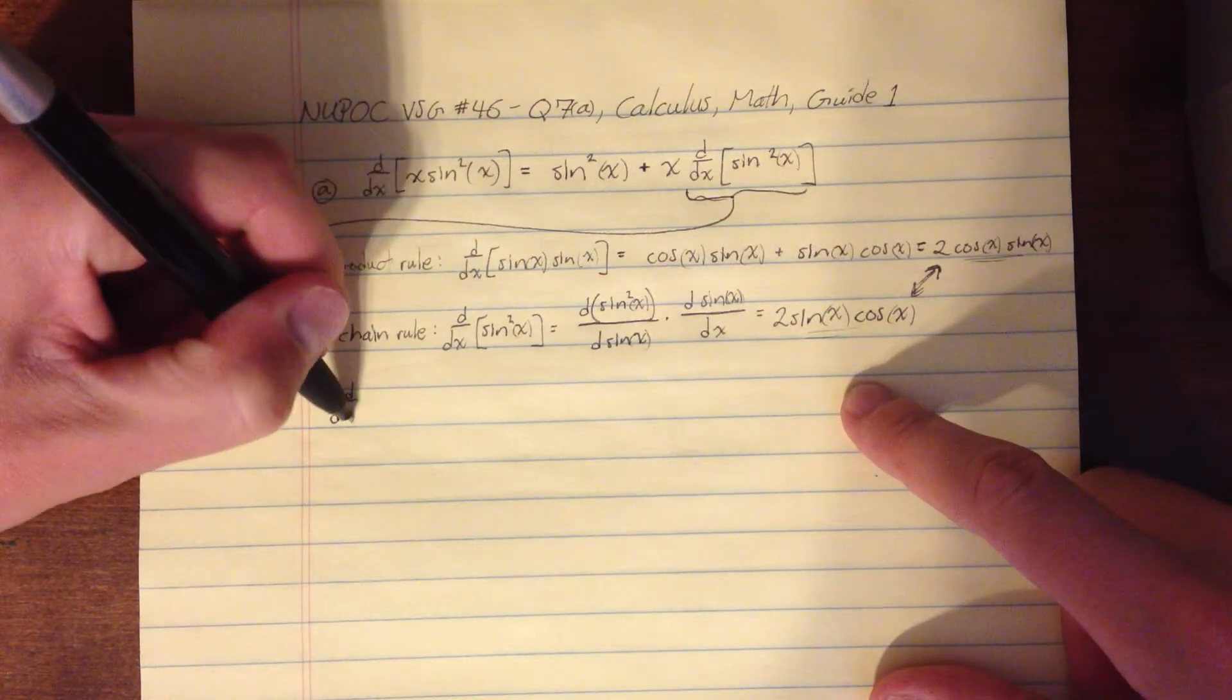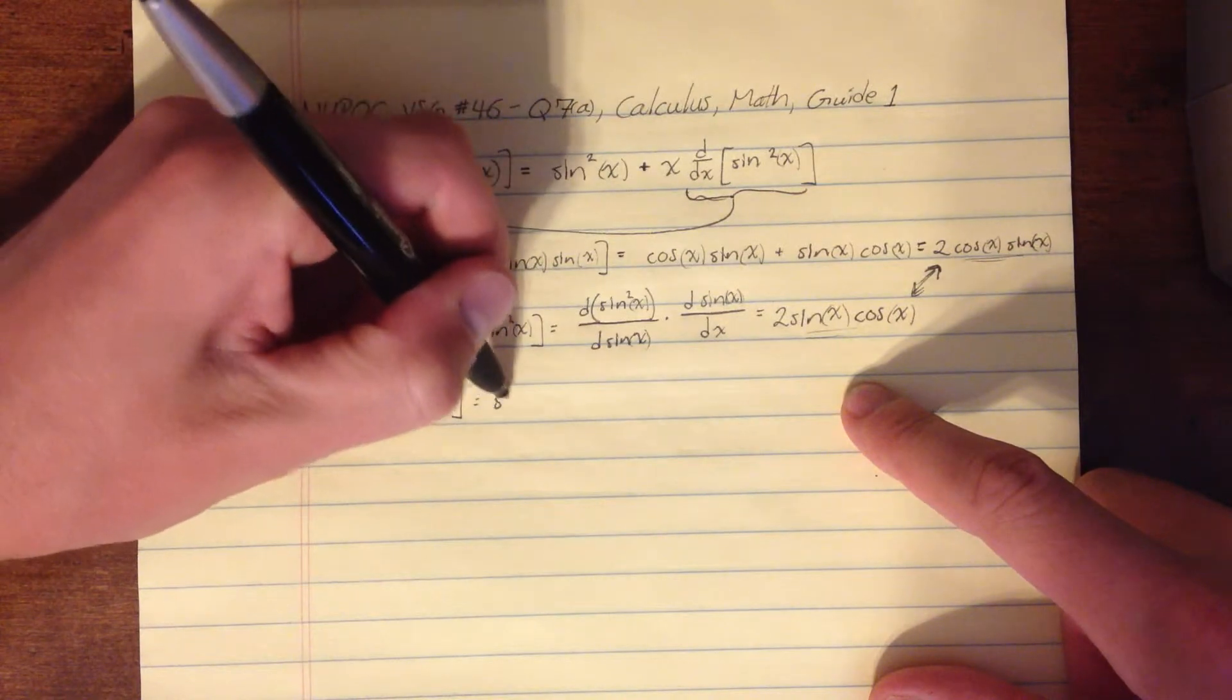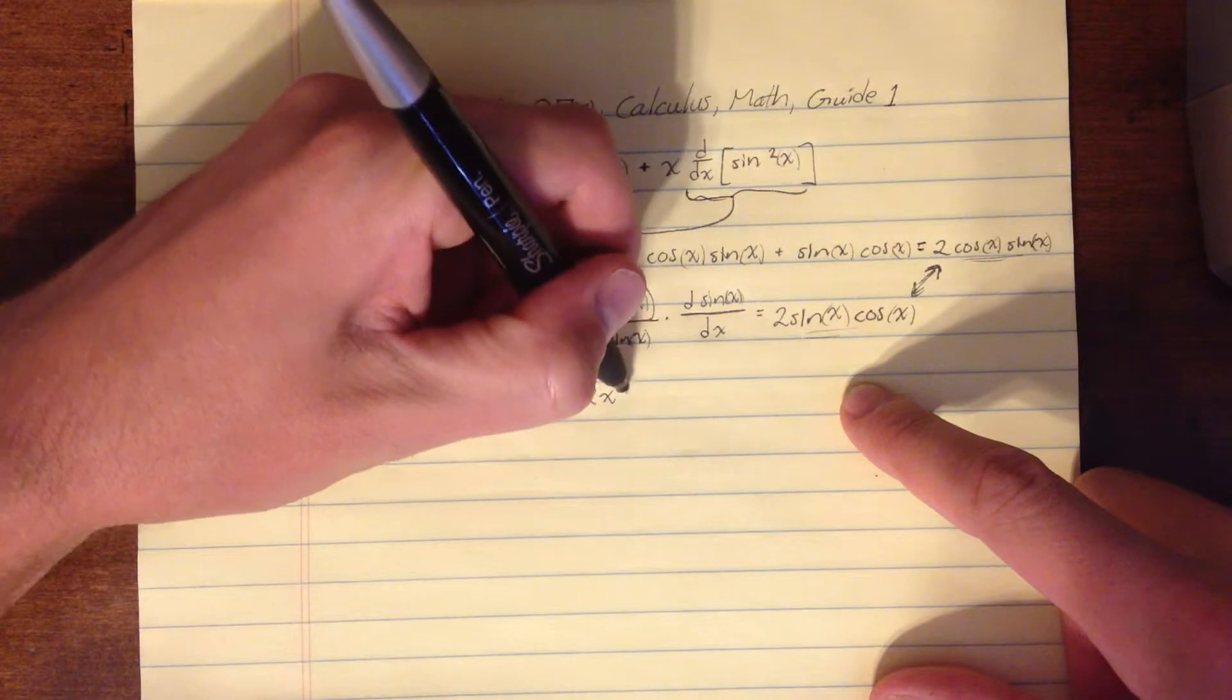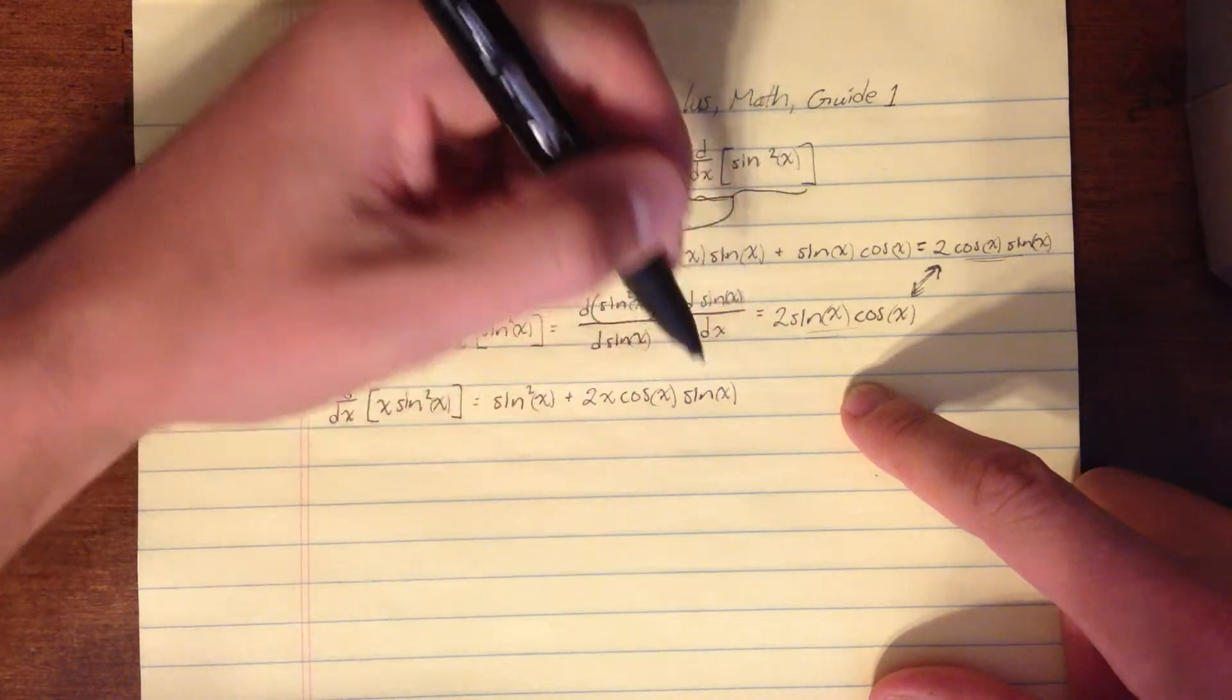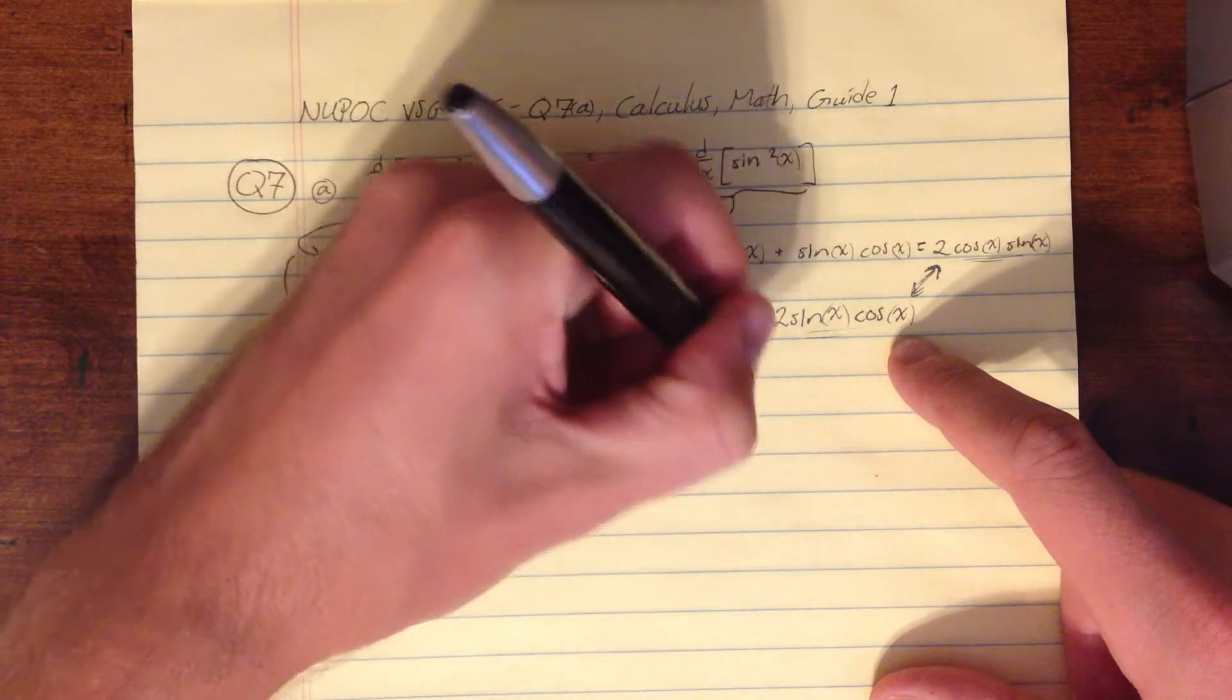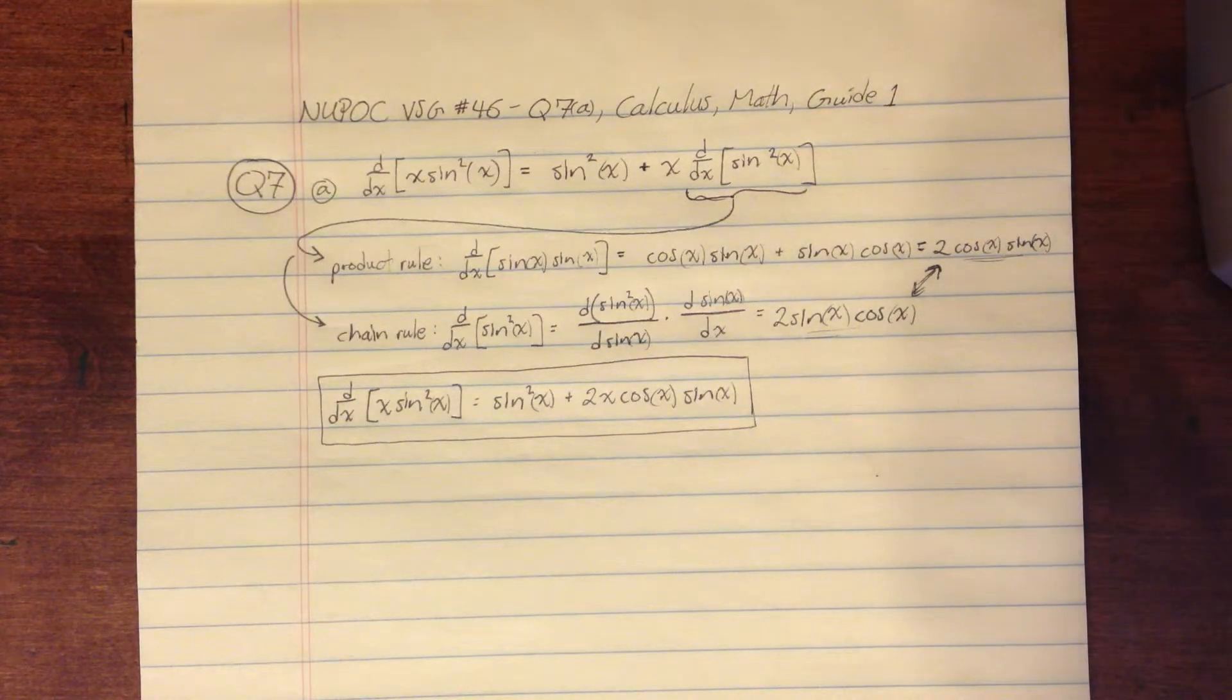So the overall solution, we write d/dx, X, sine squared of X, equals this first term, sine squared of X, plus this term times X, so 2X cosine X sine of X. So we can sort of block that off there, like that. And I think that should agree with the solution developed in the solution manual.